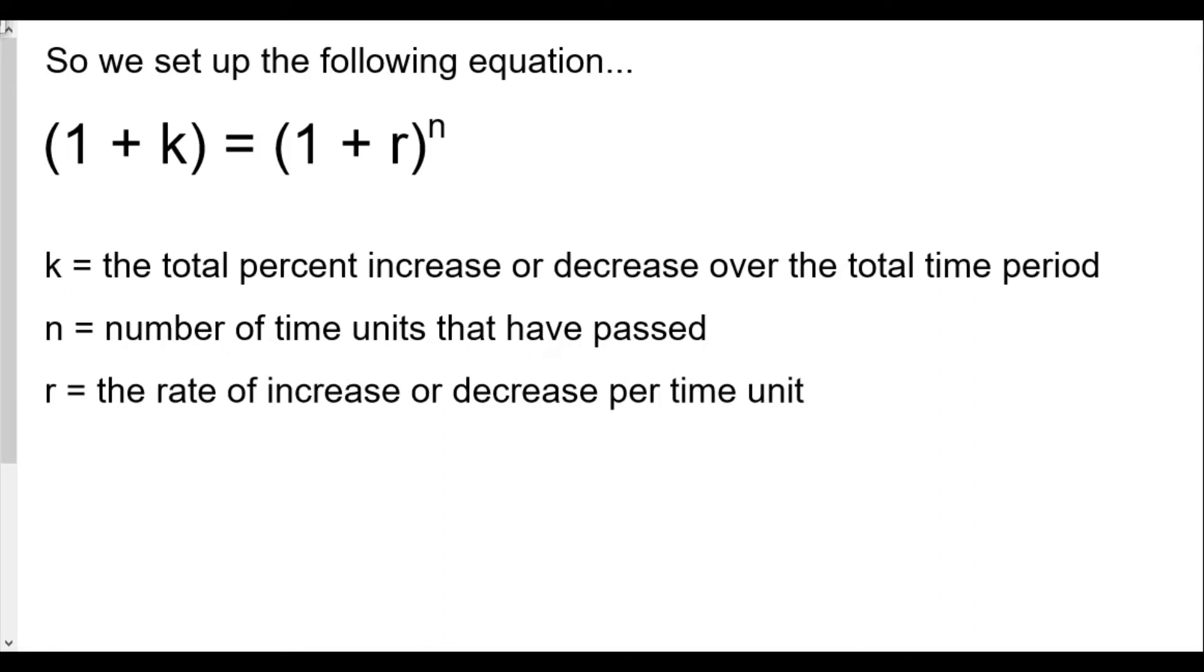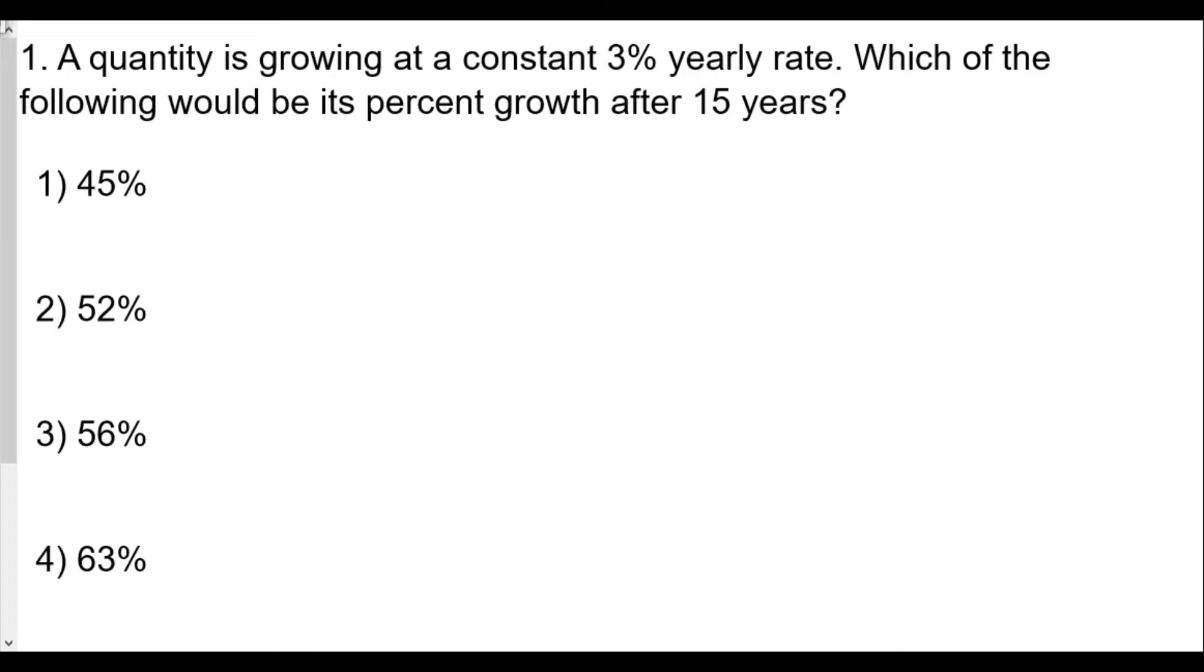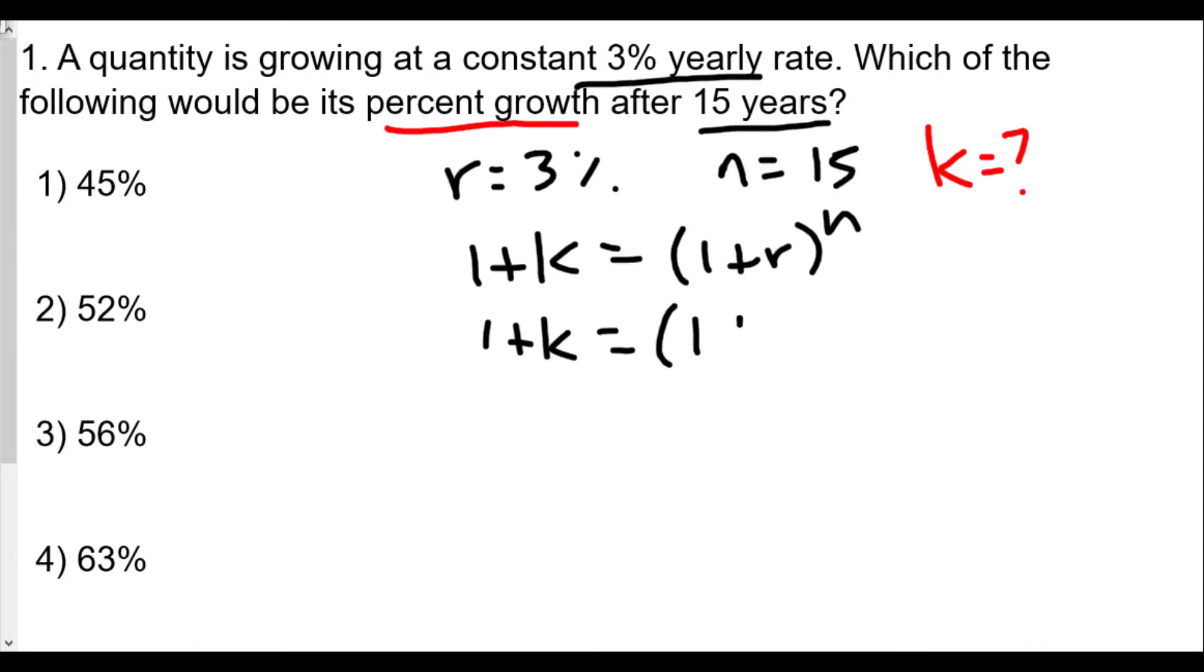Let's go back to question number one. So the yearly rate, that would be r, is 3%. So r equals 3%. And our n value would be 15 years. So which is the following percent growth? The percent growth is k, which we don't know. So we set up our equation. 1 plus k equals 1 plus r raised to the n power. So we have 1 plus k is equal to 1 plus 0.03 raised to the 15th power.